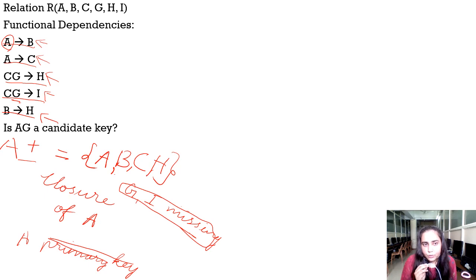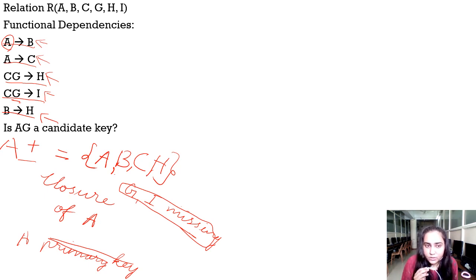When can you say that something is a primary key or a candidate key? When after taking the closure you get all the elements present. So that's what we are going to check now for A,G.